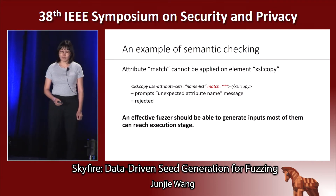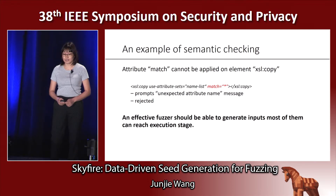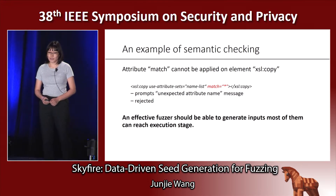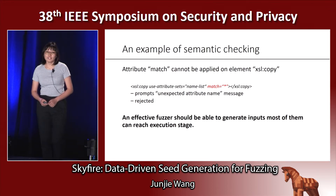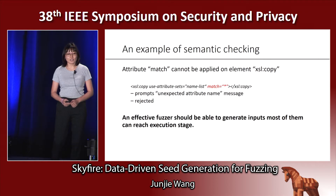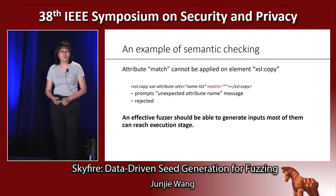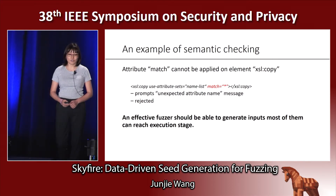For example, one XSL engine normally will check whether an attribute can be applied on a certain element. Normally, attribute 'match' cannot be applied on the element XSL:copy. If we generate a test case like this, it will get rejected by the XSL engine at the semantic checking stage, and an 'unexpected attribute name' message will be given.